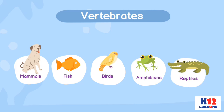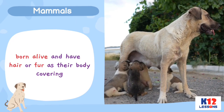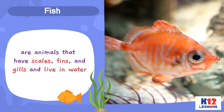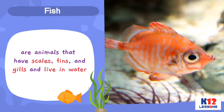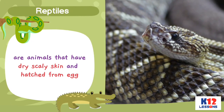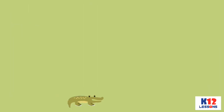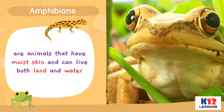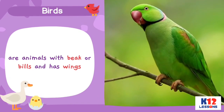Vertebrates are classified as mammals, reptiles, amphibians, birds, and fish. Mammals are animals that are born alive and have hair or fur as their body covering. Fish are animals that have scales, fins, and gills and live in water. Reptiles are animals that have dry scaly skin and are hatched from egg. Amphibians are animals that have moist skin and can live both on land and in water. Birds are animals with a beak or bill and wings.